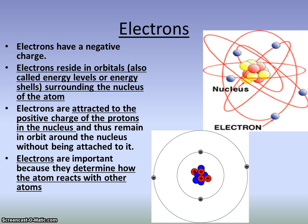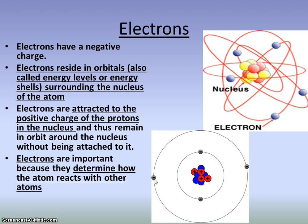Electrons are very important — they have negative charges and are on the outside of the atom, occurring in orbitals, also called energy levels or energy shells. The negative charge of the electron is attracted to the positive charge of the proton, which is why they stay in these orbitals and don't fly off. Electrons are very important because they determine how atoms react with other atoms.